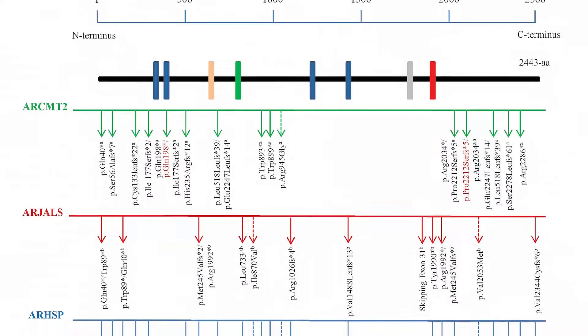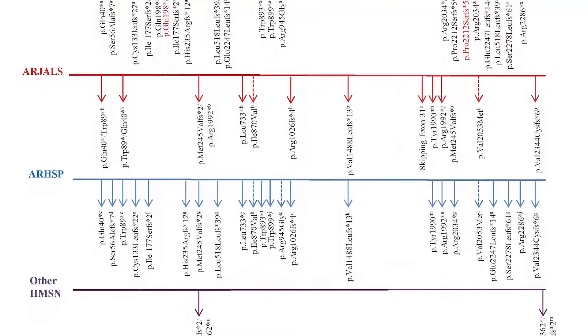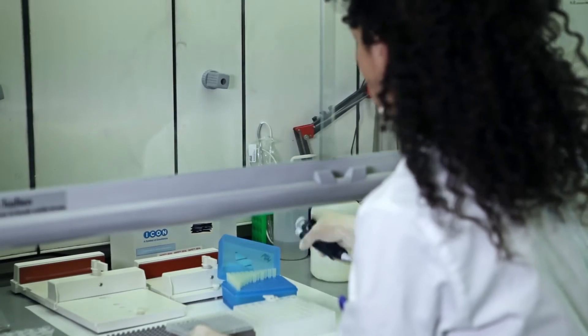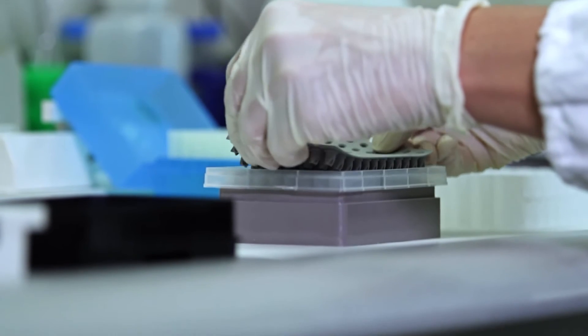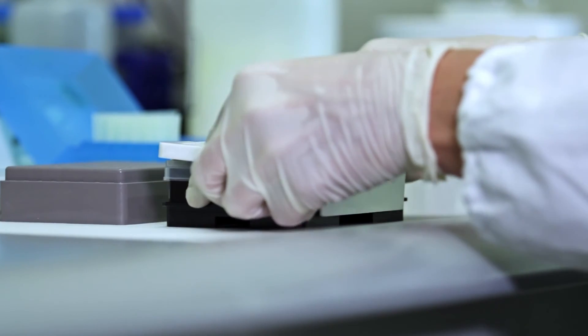Our study showed novel genotype-phenotype correlations which further broaden the clinical spectrum associated with KIAA1840 mutations. Therefore, genetic screening should be considered not only in patients with autosomal recessive hereditary spastic paraplegia with thin corpus callosum and not only in patients with autosomal recessive juvenile amyotrophic lateral sclerosis, but also in patients with autosomal recessive axonal Charcot-Marie-Tooth type 2 disease. In conclusion, the presence of common molecular, pathological, and genetic features in KIAA1840-related diseases suggests that different phenotypes of axonal degeneration may be targeted by common therapeutic strategies.